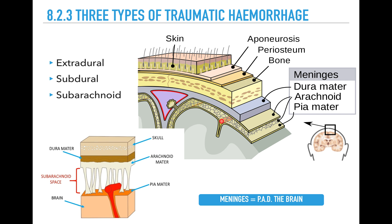Traumatic intracranial hemorrhage has three main types to understand: extradural, subdural, and subarachnoid bleeds. Remember the meninges have three layers - the pia mater, the arachnoid, and the dura mater. I remember this as PAD, so the meninges pad the brain. An extradural bleed is between the skull and the dura. A subdural bleed is beneath the dura, between the arachnoid layer and the dural layer. A subarachnoid bleed is in the space between the arachnoid and the pia mater.